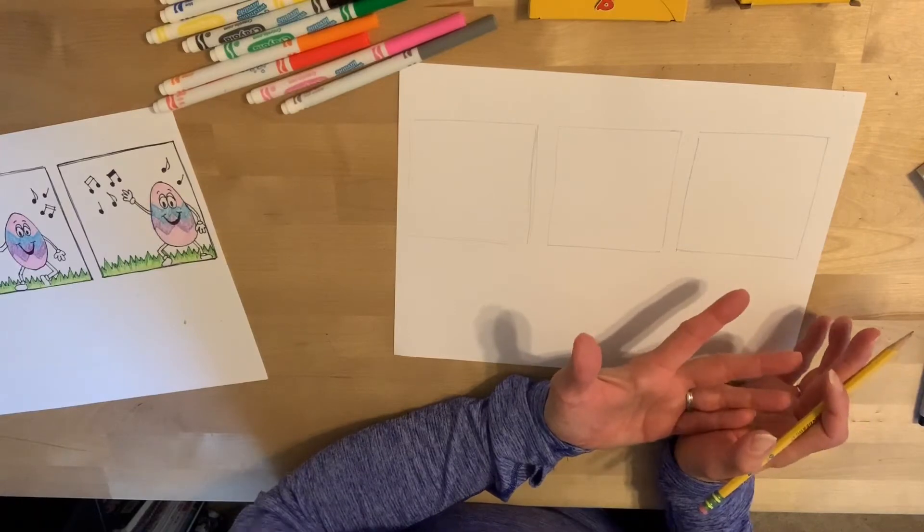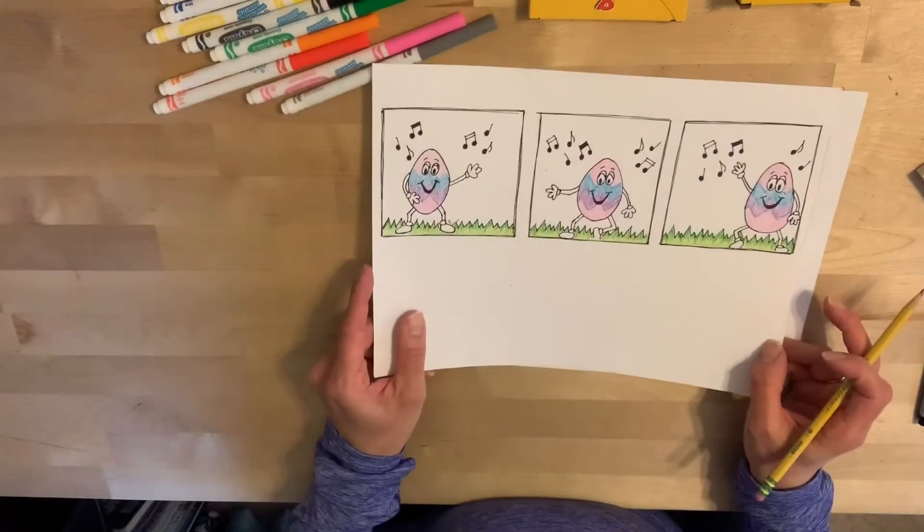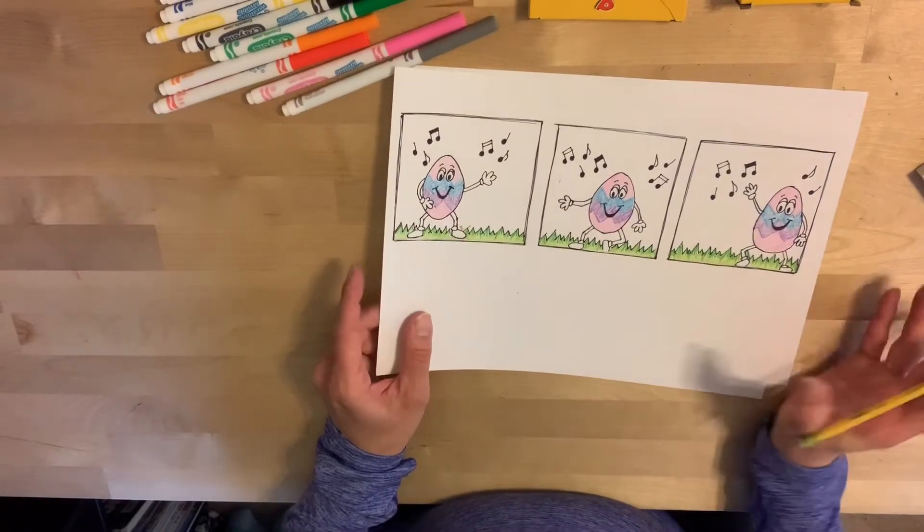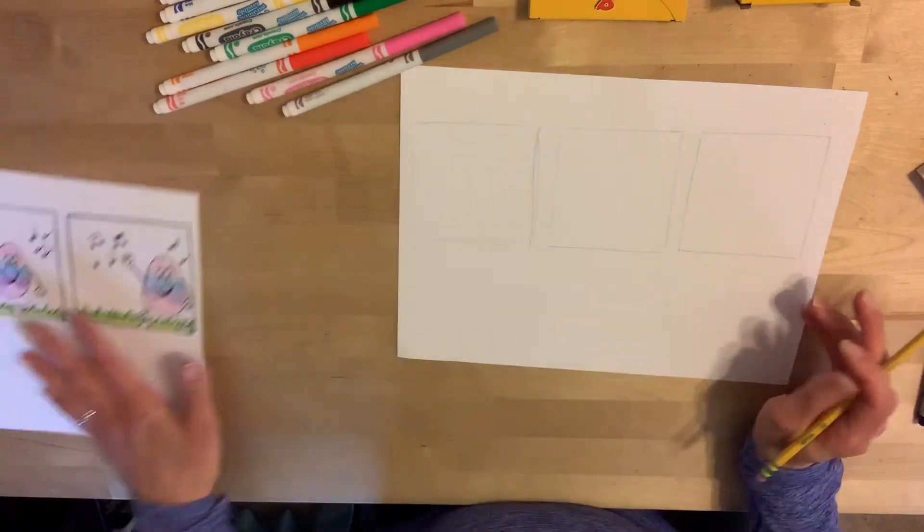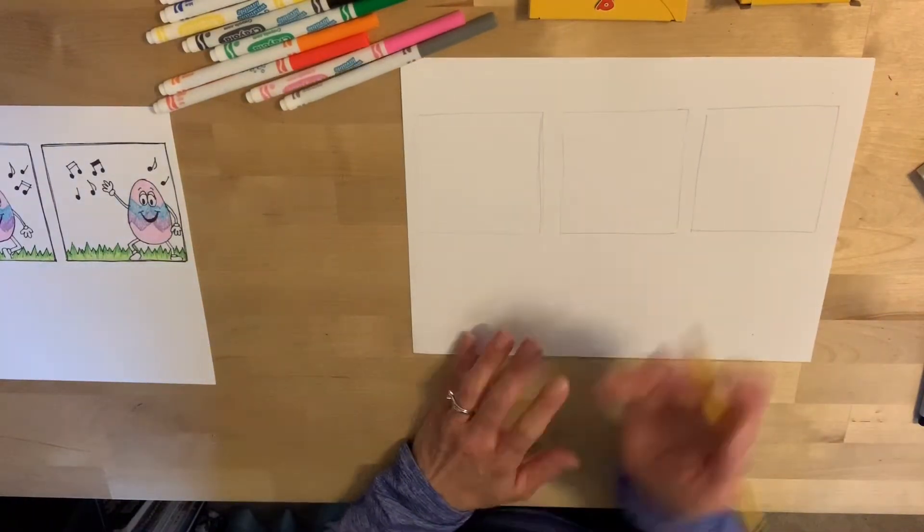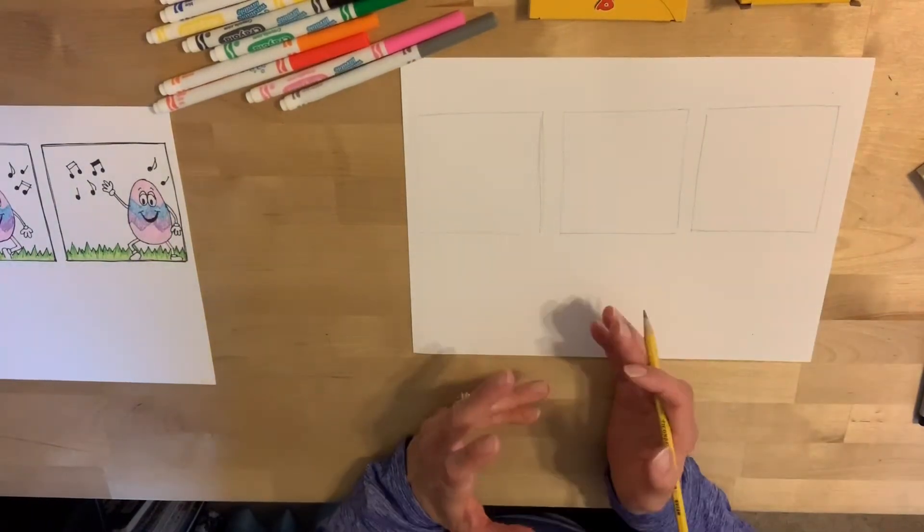Doesn't have to be too detailed. You can see mine, not a lot of details. Enough to get the idea of what it is, but not a whole lot of details, especially tiny ones. Then you need to start drawing. So I think I'm just going to do a butterfly flying.